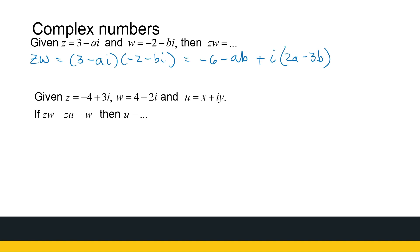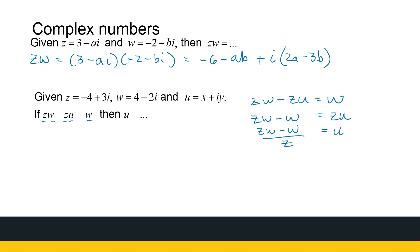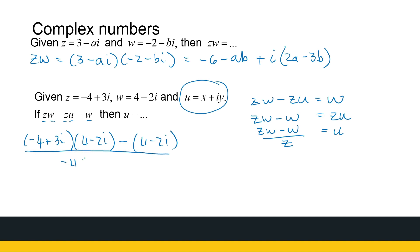For the last question, given Z, W, and U in terms of X and Y, if ZW minus ZU equals W, what is U? Rather than substituting everything directly, let's rearrange: ZU equals ZW minus W, so U equals (ZW minus W) divided by Z. Computing: Z times W with Z = minus 4 plus 3i and W = 4 minus 2i gives minus 10 plus 20i. Subtracting W: minus 10 minus 4 = minus 14 and 20 plus 2 = 22i. So we need (minus 14 plus 22i) divided by (minus 4 plus 3i).